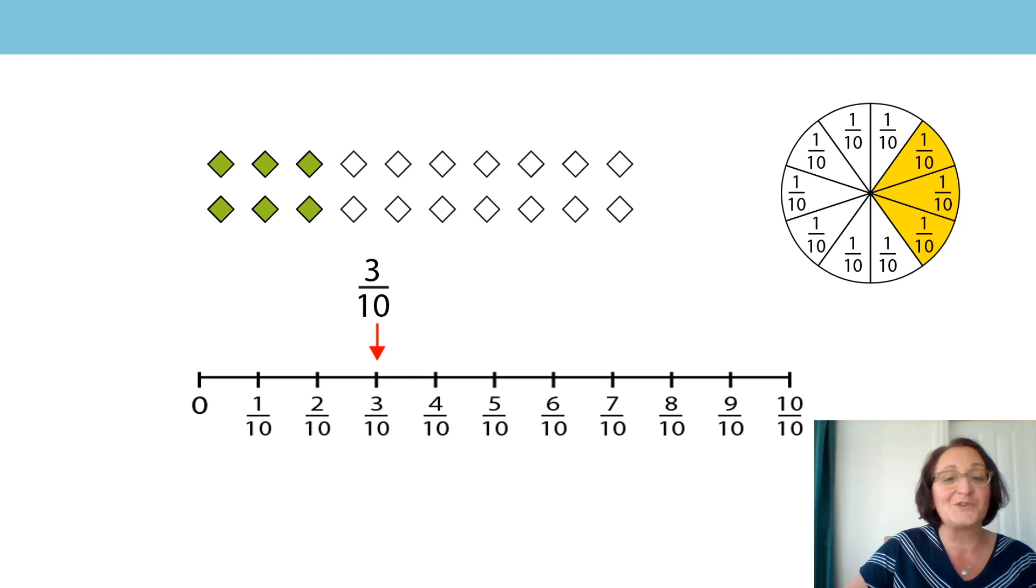Okay, make a prediction what's going to happen when I move to four-tenths. Exactly. Four columns of our shapes will be shaded, and four parts of our circle. Let's just check. Brilliant. Let's move to five-tenths, and six-tenths, and seven-tenths. So we've got a larger part of our fraction now that is shaded either in our shapes or our circle, and we are a long way along the number line.